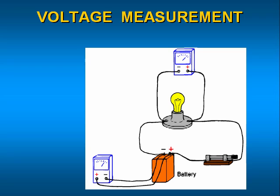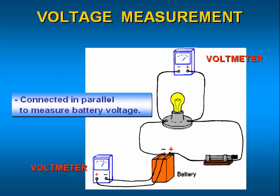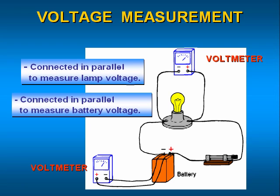Voltmeters have very large internal impedances and are connected in parallel with the component being measured. Voltmeters make measurements in units of volts. For example, to measure the voltage produced by a battery, the voltmeter will be connected in parallel with the battery. In order to measure the voltage across a load, the voltmeter is connected in parallel with the load.